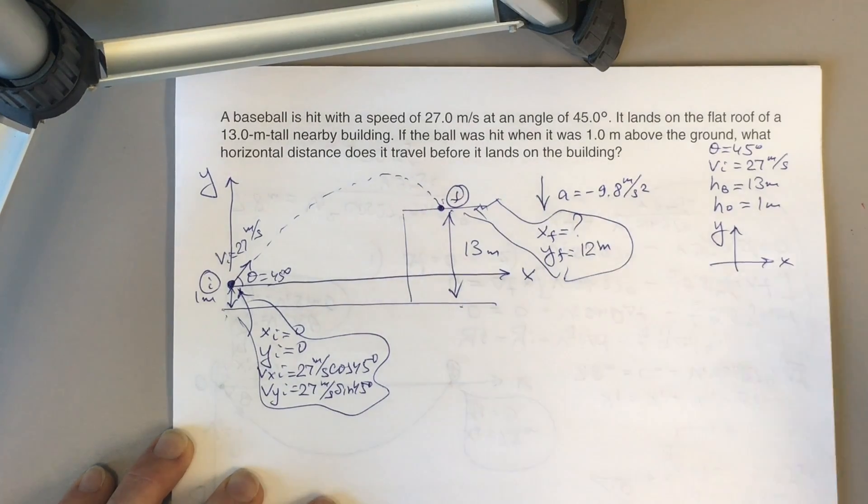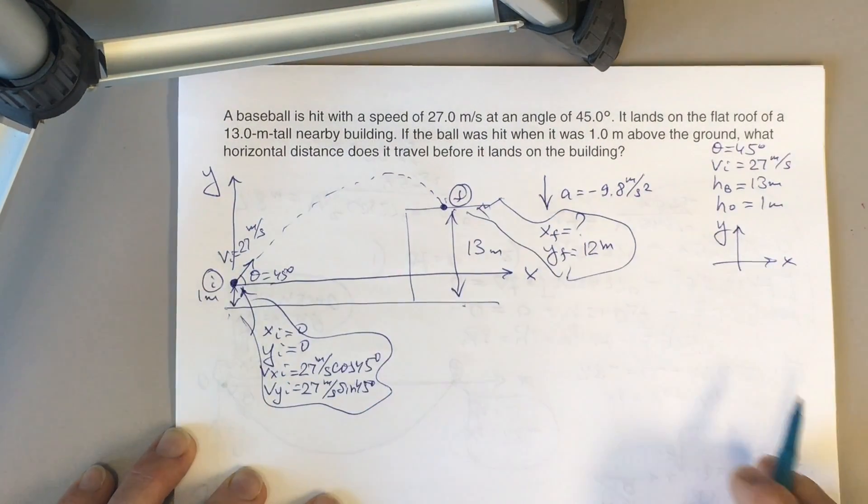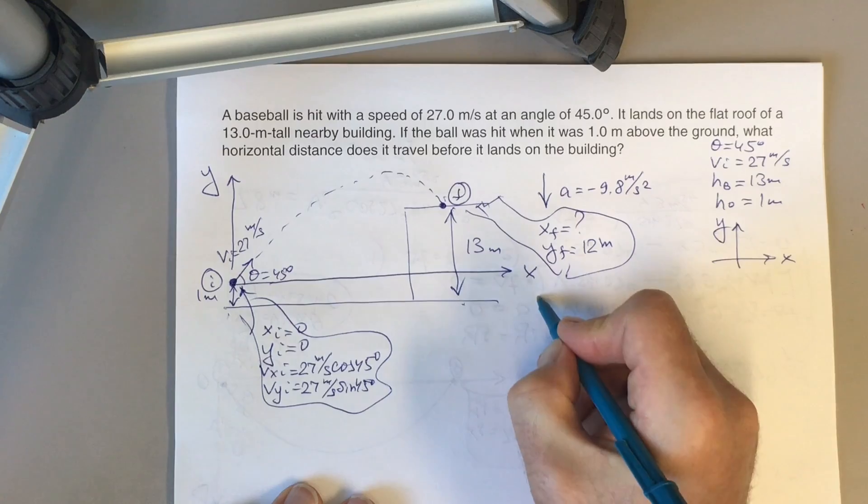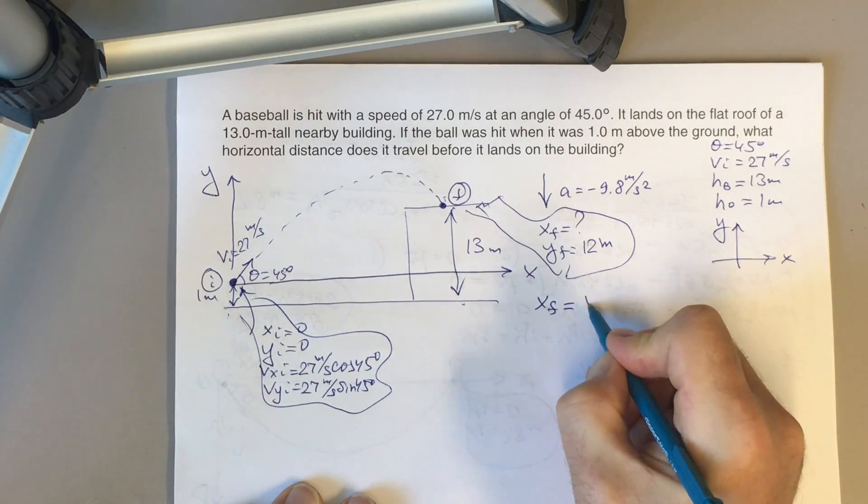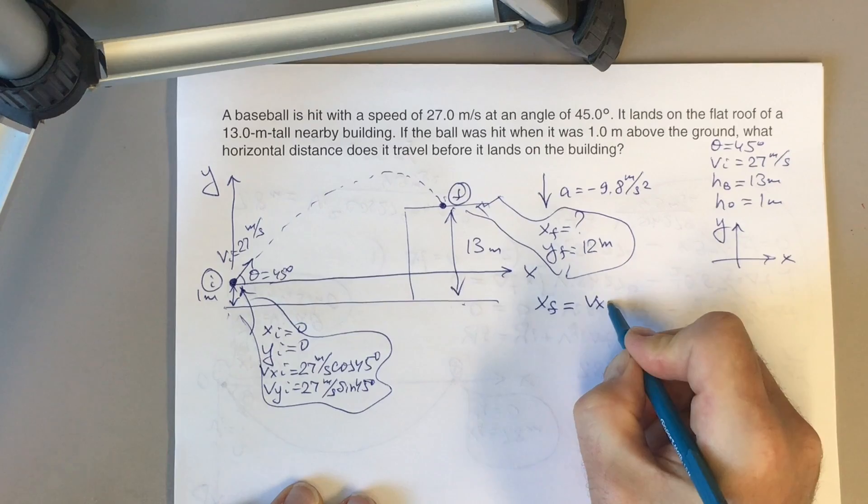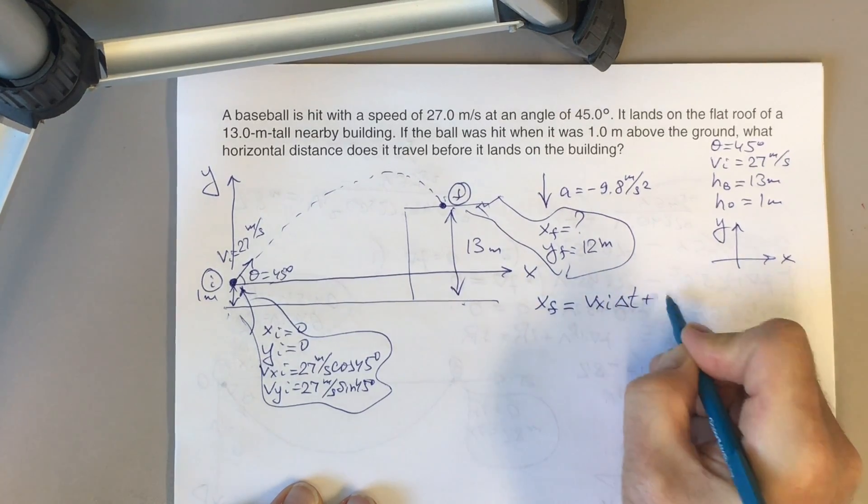And again, because we have horizontal motion, we have to start from the equation for x-final. We need to find x-final anyway. So this is vx-initial times delta t plus x-initial.